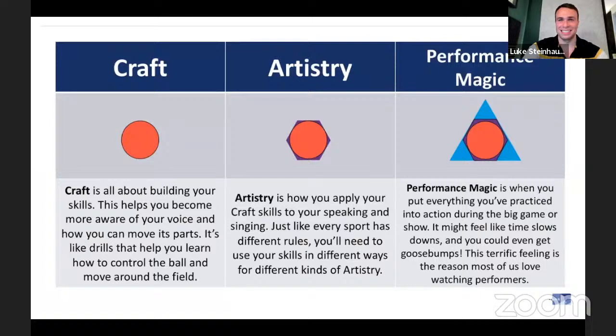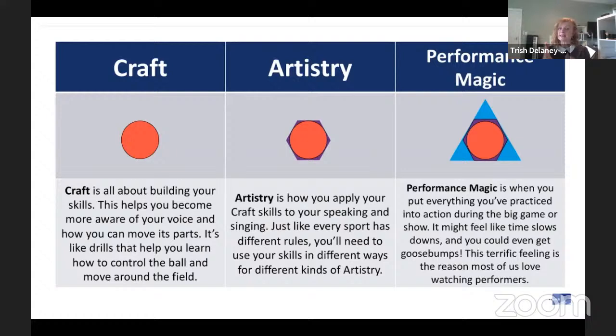To become friendly with our 13 structures we're going to have to concentrate on a few aspects. When we're building a house, sometimes the most important bit is the bit not actually seen — the foundation — and that is like our craft. Craft is all about building our skills; it's going to make us aware of our voices and how we can move its parts. It's like training drills with a ball sport that give you control of the ball, so you can move it around the field in soccer. Or if you're a dancer, it's like the positions a dancer does at the barre — giving them control over certain muscles so they know how to put those muscles into choreography to perform.